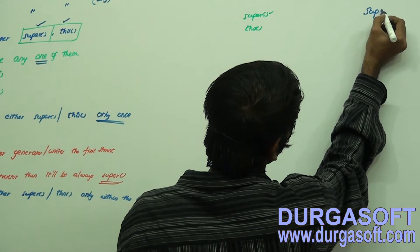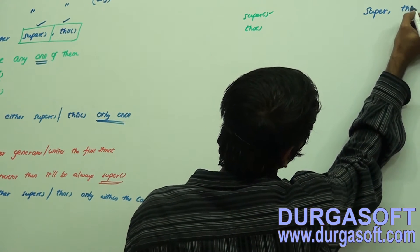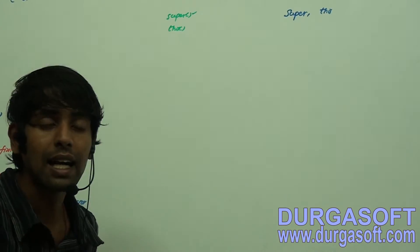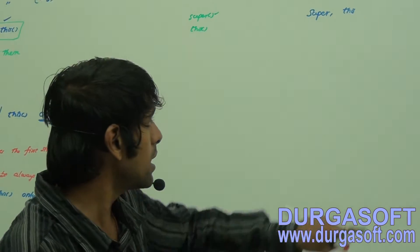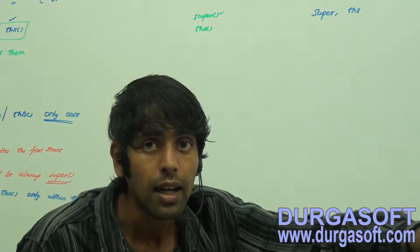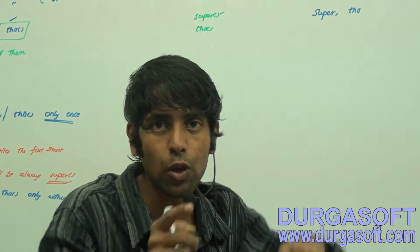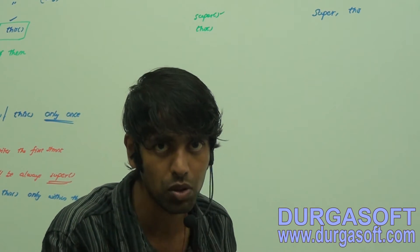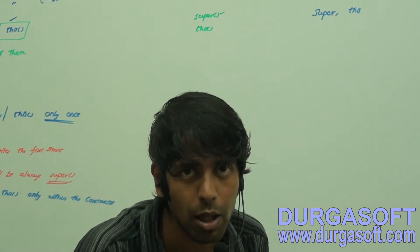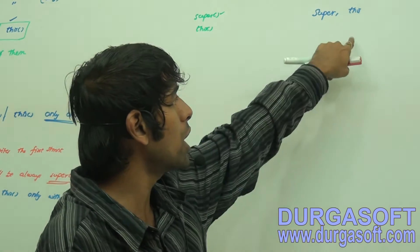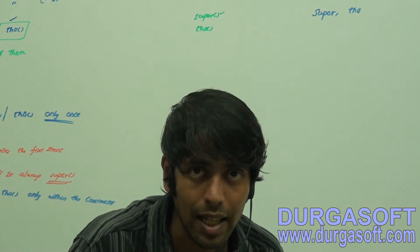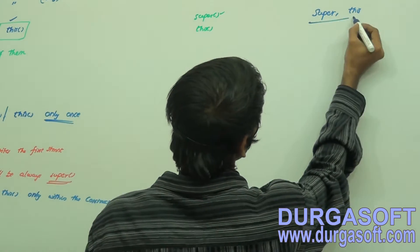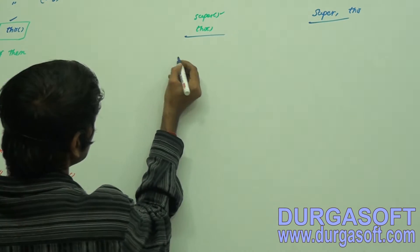The super keyword represents a keyword, and this also represents a keyword. Both are meant for referring to static and instance members. Super is going to refer to static and instance members of the super class. This is going to refer to instance and static members of the current class.